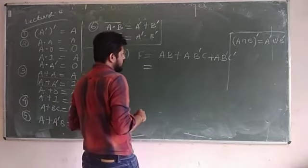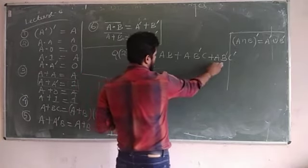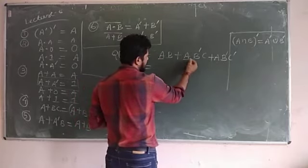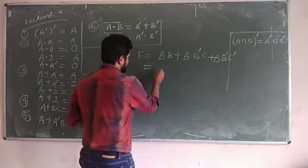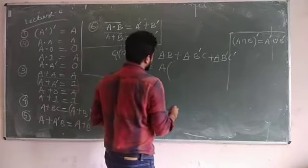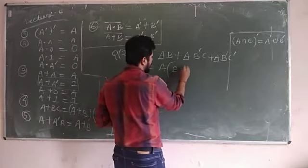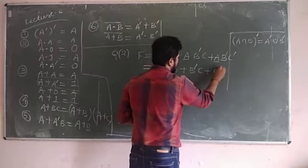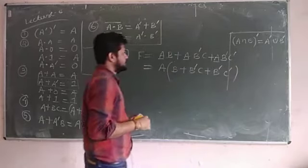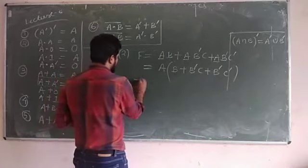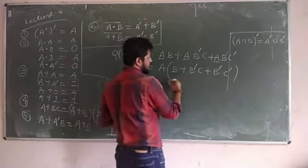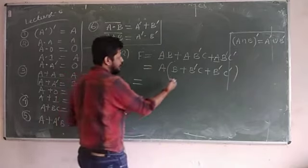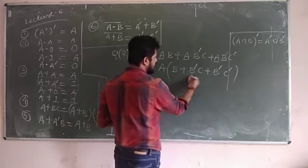You have to check what is common in all the expressions. A is present in the first, second, and third terms, so take A as common. What remains is: B OR (B complement · C) OR (B complement · C complement). To minimize this expression, apply the absorption law or distributive law.